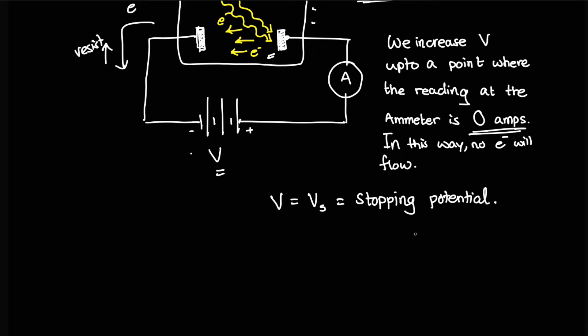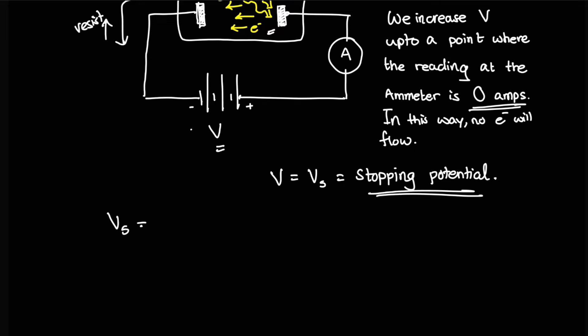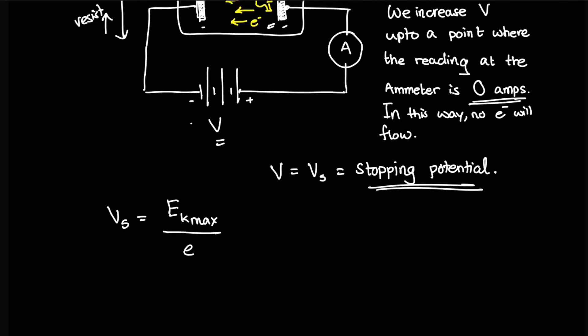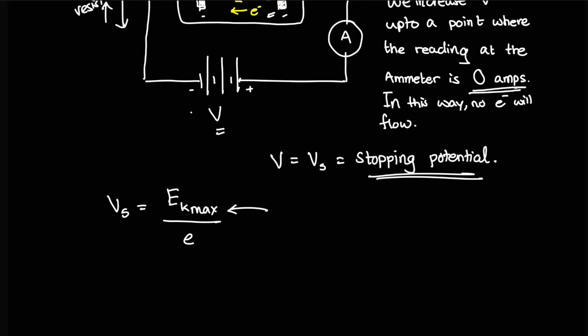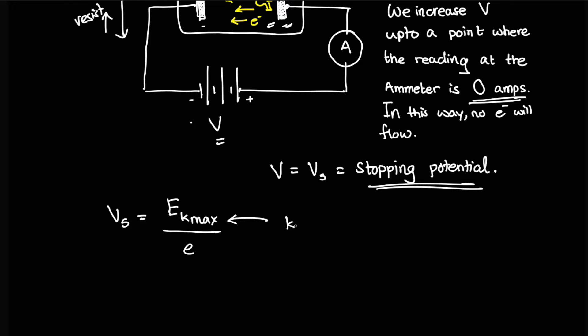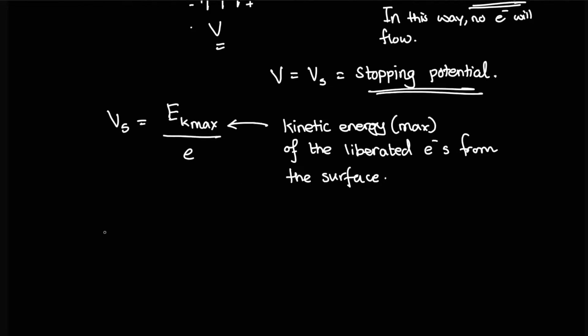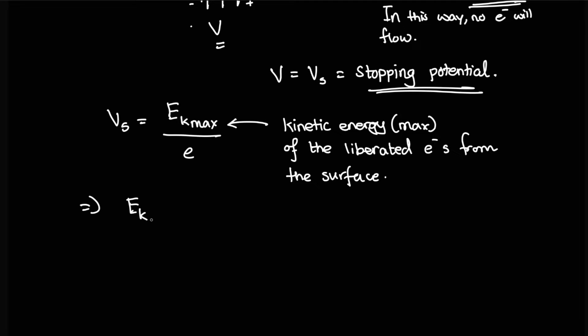The question is, what is actually the stopping potential? The stopping potential can be expressed as V_S equals E_K max over the electron's charge. What is actually this E_K max? E_K max is the maximum kinetic energy of the electrons liberated from their surface. This is the maximum kinetic energy. From this, of course, we can write that E_K max is equal to V_S times E. One thing to keep in mind is that E_K max over here is represented in terms of electron volts, which is also another unit of charge.